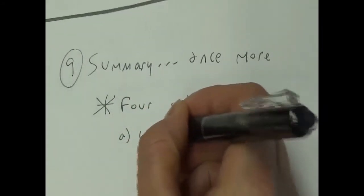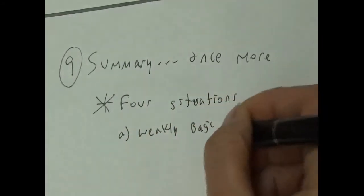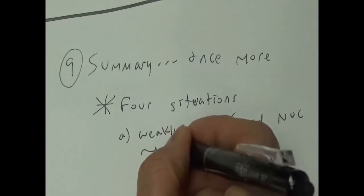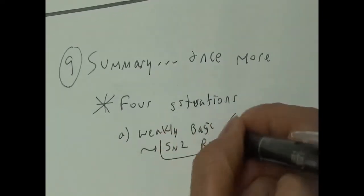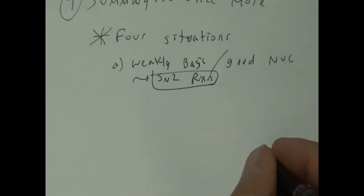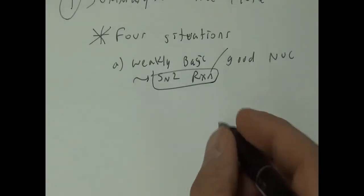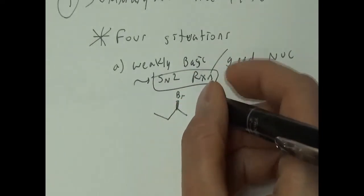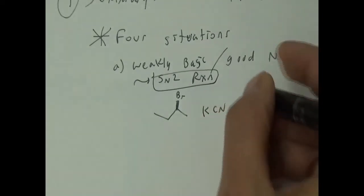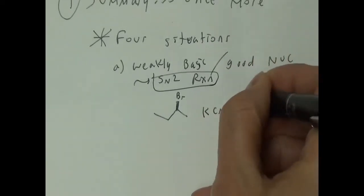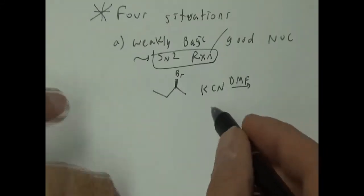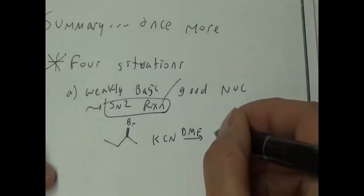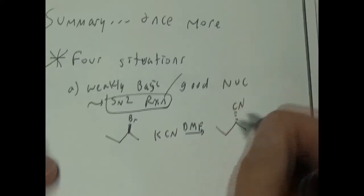For example, a chiral secondary substrate with KCN in DMF — a good nucleophile, negatively charged, in a polar aprotic solvent — is suggestive of an SN2 reaction, and you'd get the inverted SN2 product. Another good SN2 nucleophile is NaN3, sodium azide, in acetone as a polar aprotic solvent.